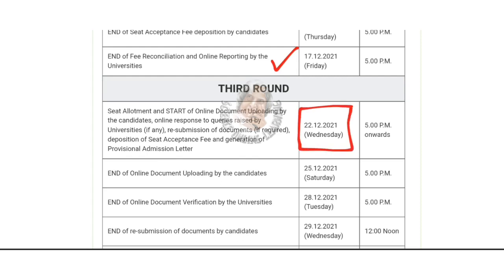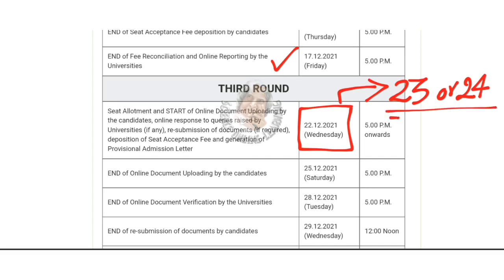In the third round, if you don't get a seat, you have to upgrade. In the third round, you can get a seat. You can get a request.